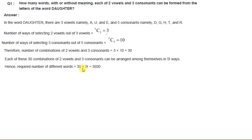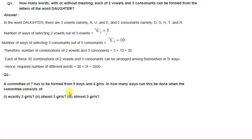The next question: a committee of 7 has to be formed from 9 boys and 4 girls. In how many ways can this be done when the committee consists of exactly 3 girls, at least 3 girls, and at most 3 girls?